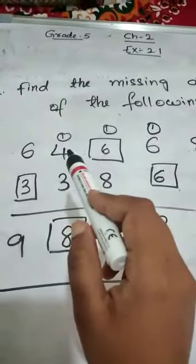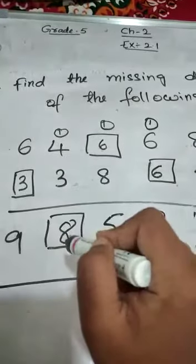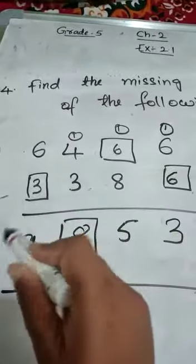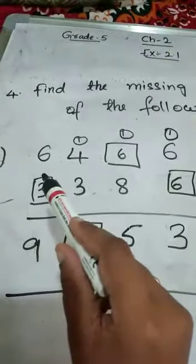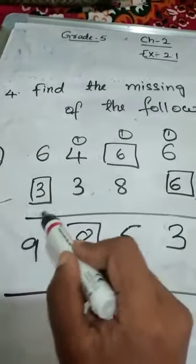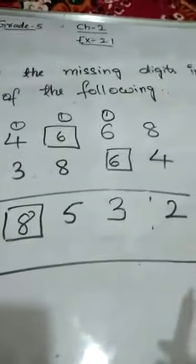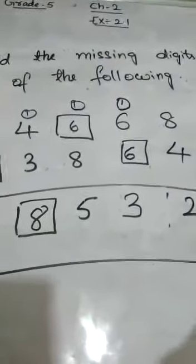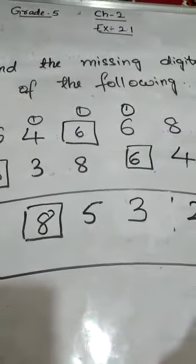We should get the 15. So 8 they have already given. So what we have to add? 1 carry already there. So we have to write the 6. 6 plus 1 is 7, 7 plus 8 is 15. Again 1 carry here. 4 plus 1 is 5, 5 plus 3 is 8. So they have given here 9. So what we have to write here? We have to add 3. So 6 plus 3 is 9. With this we have completed our exercise 2.1. In the next class I am going to start new topic. Thank you.